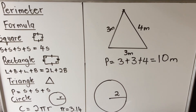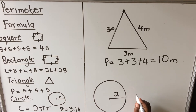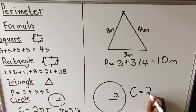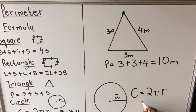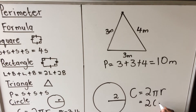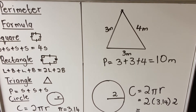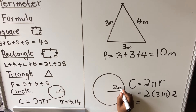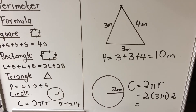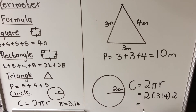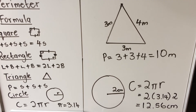Now we have a circle. The perimeter of a circle has a special name: the circumference. Circumference equals 2πr, where r is the radius — the distance from the center to the circumference. Pi is 3.14 and our radius is 2 centimeters. So: 2 times 3.14 times 2 gives us a circumference of 12.56 centimeters.